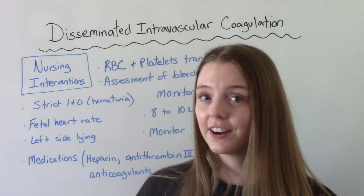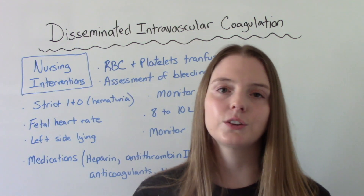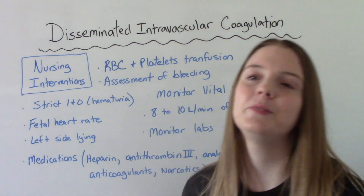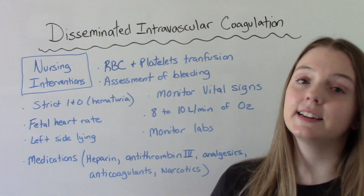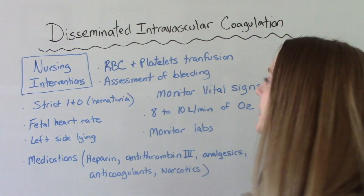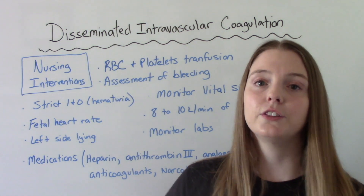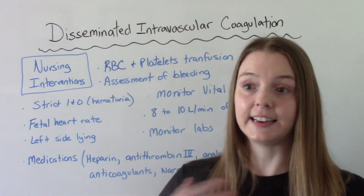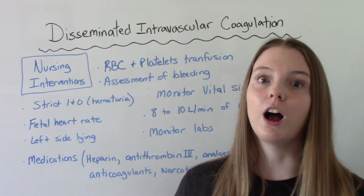DIC is a very serious condition, so our nursing interventions are key to helping the patient get better. You will likely be doing transfusions — red blood cells, platelets, or plasma — so be prepared for that. You also need to do a very thorough assessment of the bleeding. They're going to be bleeding from multiple locations: gums, IV sites, internally, GI bleeds. So a very good bleeding assessment is essential.